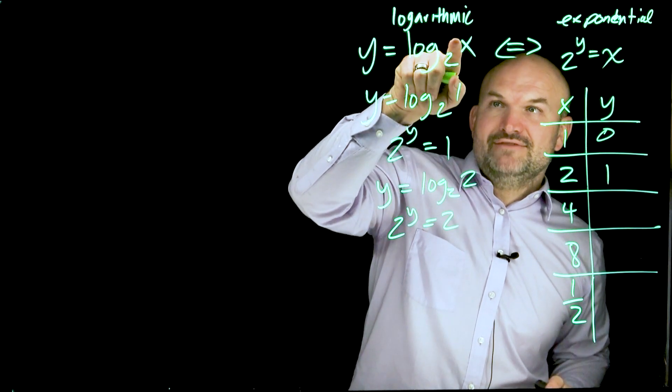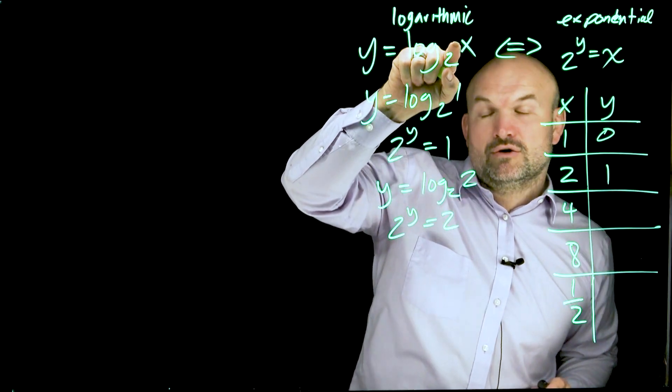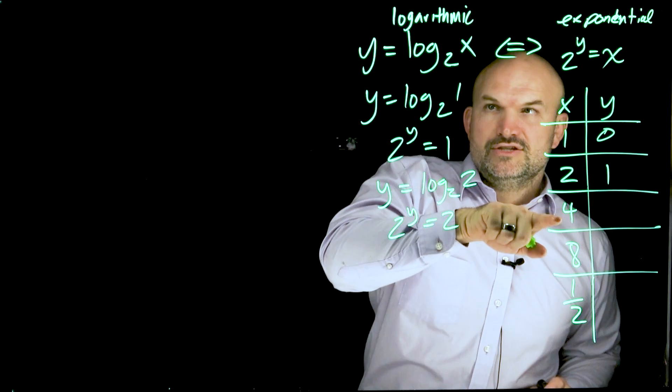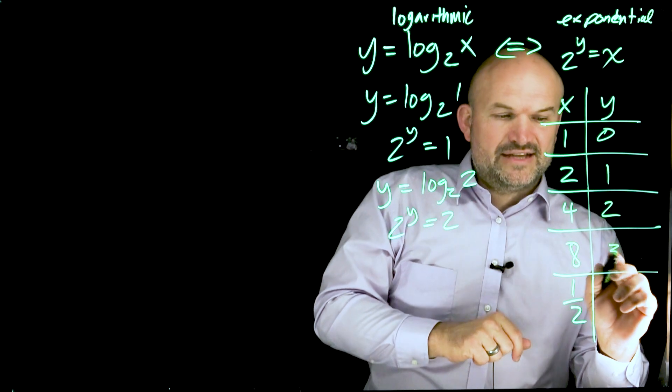What about if y equals log base 2 of 2, if x is equal to 2? 2 raised to what value is going to give you 2? Hopefully you recognize that is going to be 1. No matter what value I plug in, I'm basically asking myself 2 raised to what number y is going to equal that value or argument inside your logarithm. So 2 raised to what number is going to give me 4? That's 2. 2 raised to what number is going to give me 8? That's 3.